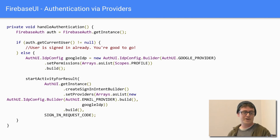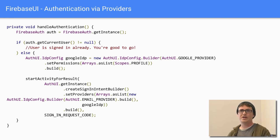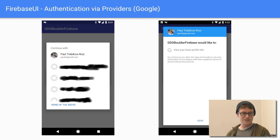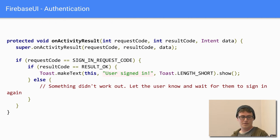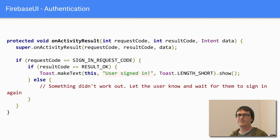If you want to use providers, use the AuthUI IDP config, pass in your providers array, and start an activity for result. Here I just use the Google provider. It lets the user select their account, run through the standard login flow, and grant access. On activity result you check if sign-in was successful and handle whatever needs to happen — starting an event or notifying the user of failure.